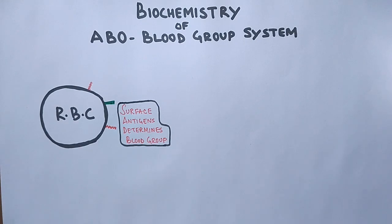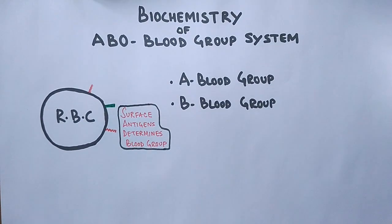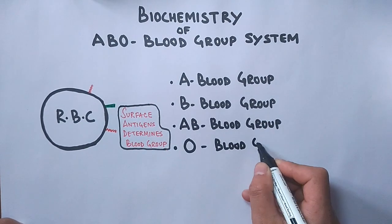In human population the ABO system has four possible blood groups: A blood group, B blood group, AB blood group, and O blood group.